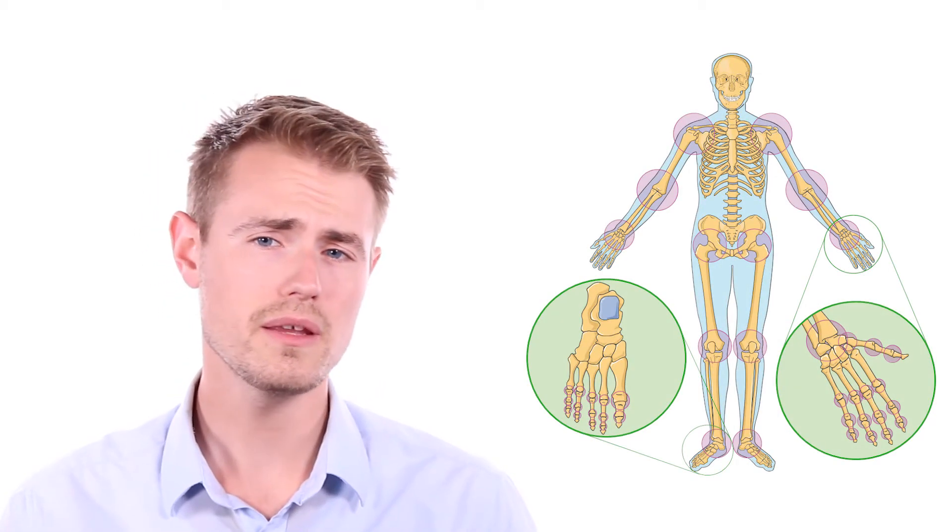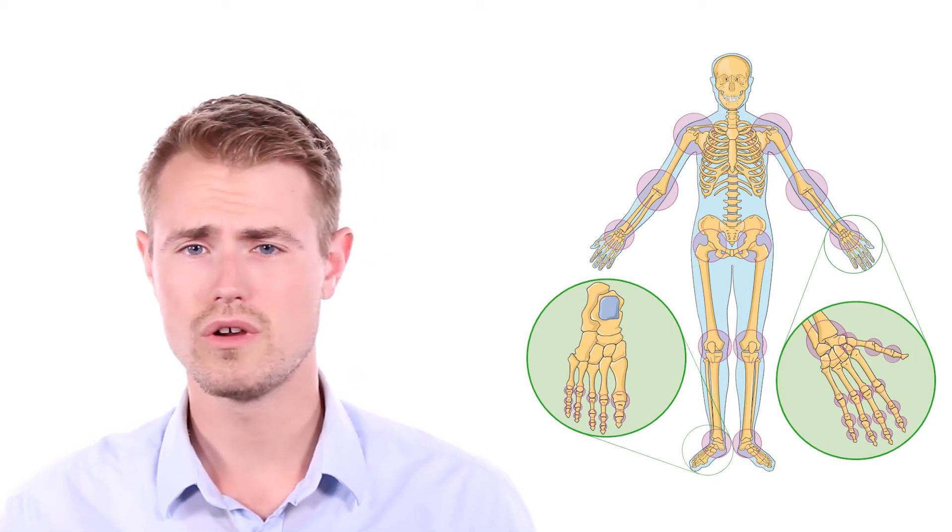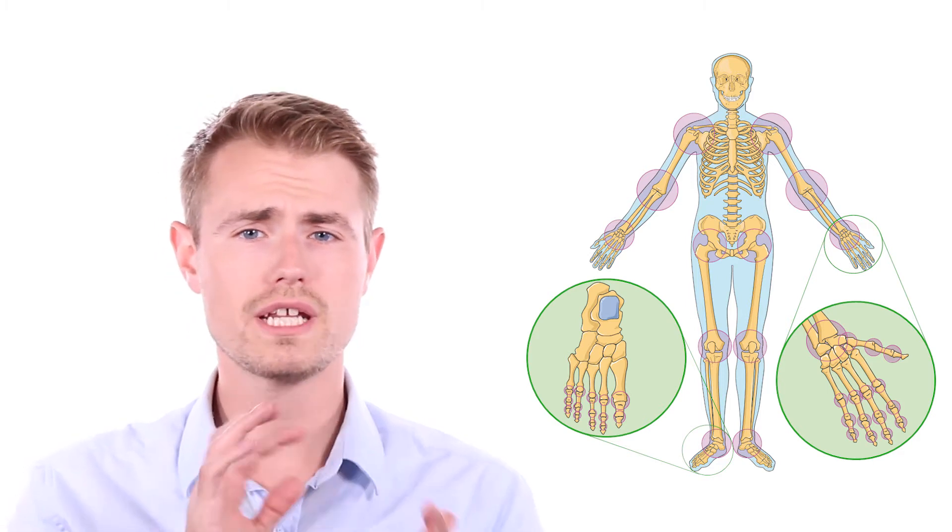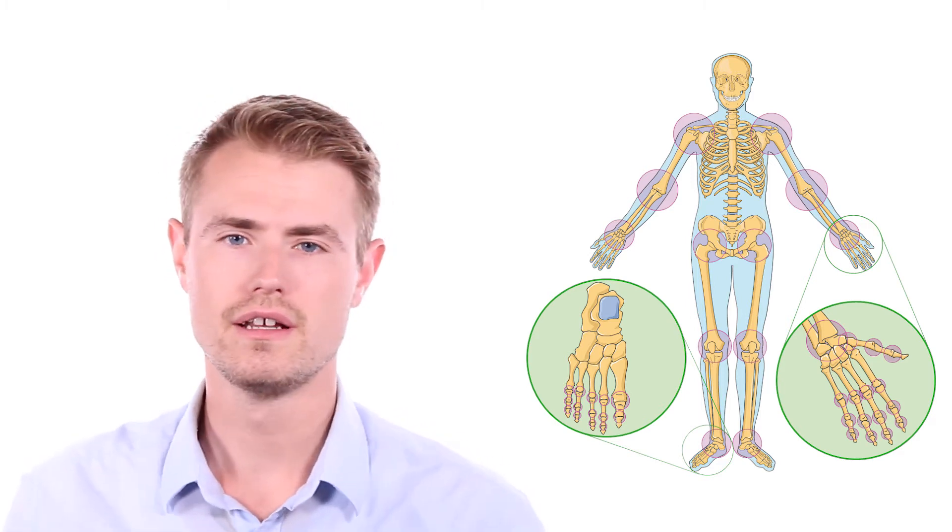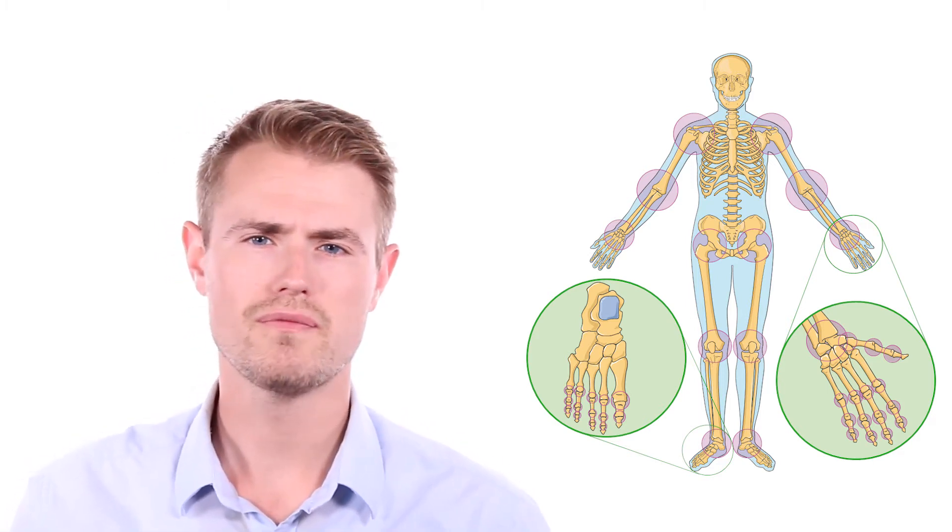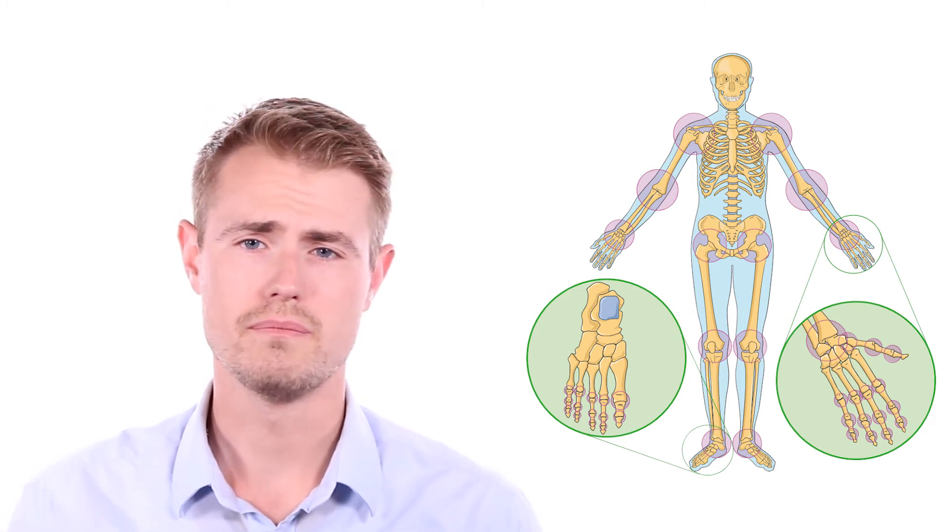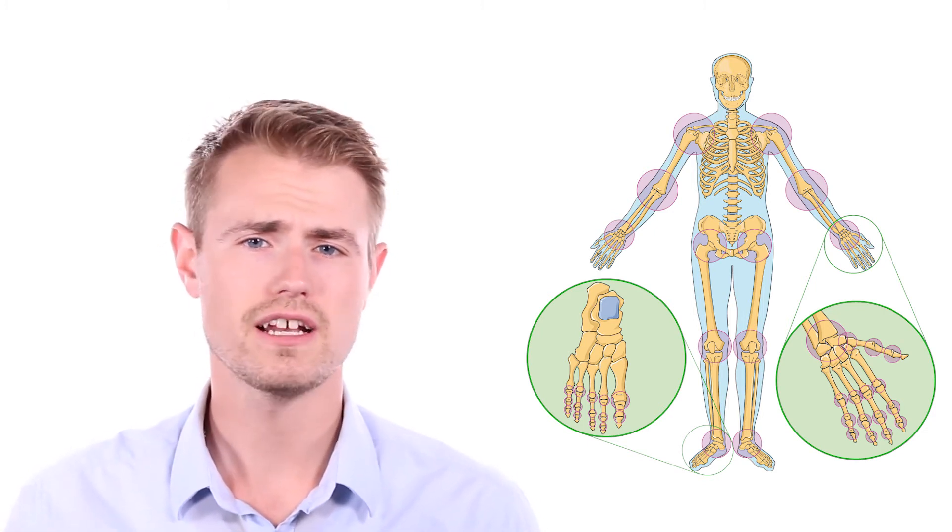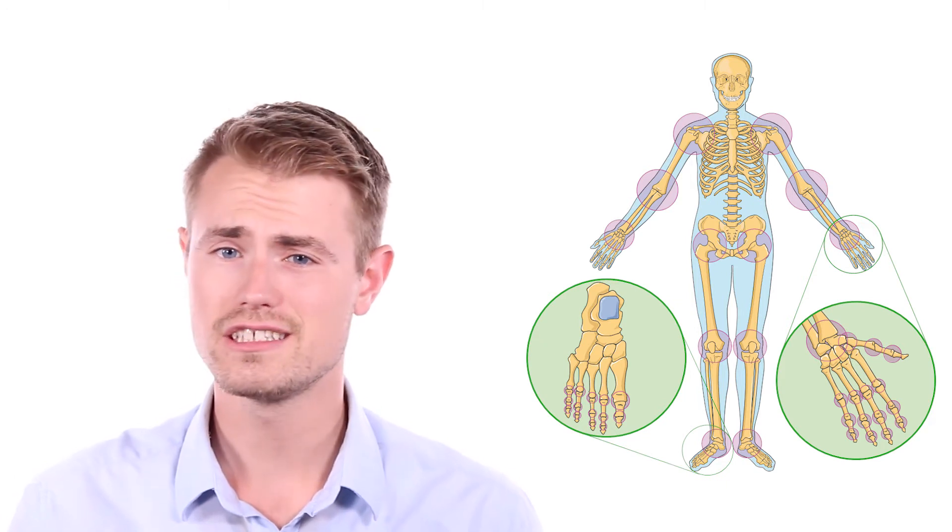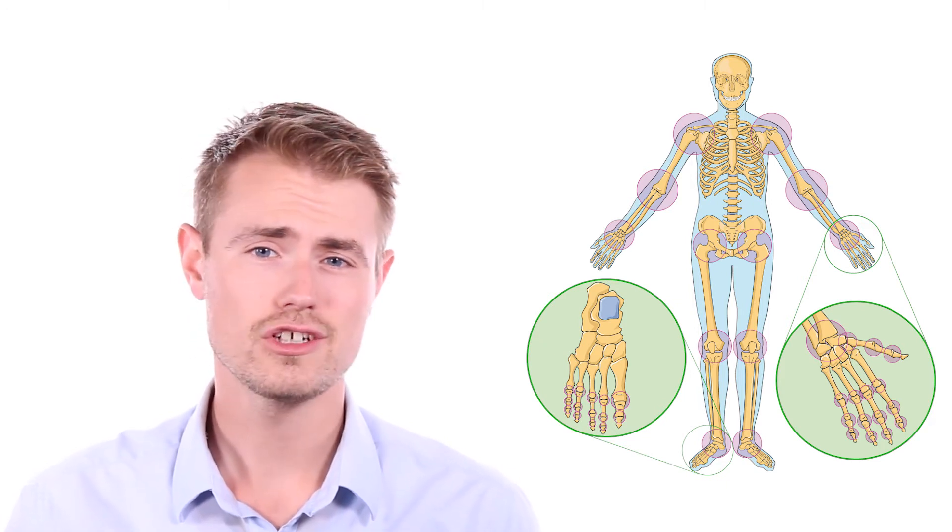The various classes of joints include but are not limited to a pivot joint, C1 and C2 of the neck, providing rotation of one bone around another. A hinge joint like the elbow provides flexion and extension. A saddle joint between the carpal and metacarpal of the thumb provides flexion, extension, adduction, abduction, and circumduction.